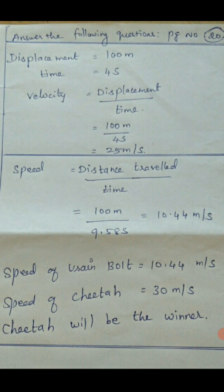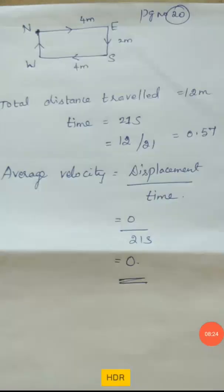Second question: Usain Bolt covers 100 meters in 9.58 seconds. Calculate his speed. Who will be the winner if Usain Bolt competes with a cheetah running at 30 meters per second? Speed equals distance divided by time: 100 divided by 9.58 equals 10.44 meters per second. The speed of Usain Bolt is 10.44 m/s and the speed of the cheetah is 30 m/s. The cheetah will be the winner.